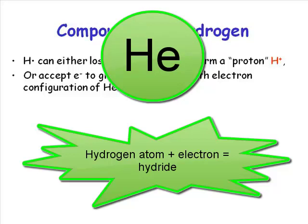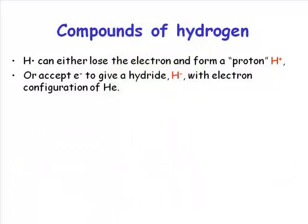That would be a hydride species. So hydrogen is a special atom where it only has one electron, so it can lose that electron to become a cationic species or gain an electron to become an anionic species.